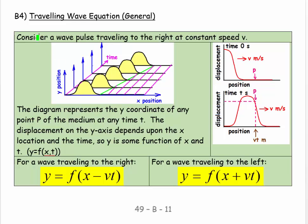Okay. And what we can say is consider a wave pulse traveling to the right at constant speed. The diagram represents the Y coordinate of any point P of the medium at any time. Time is going backwards. The displacement on the Y axis depends upon what position P is at, what X position it is, and also what the time is. And so, we can say Y is a function of X and T.